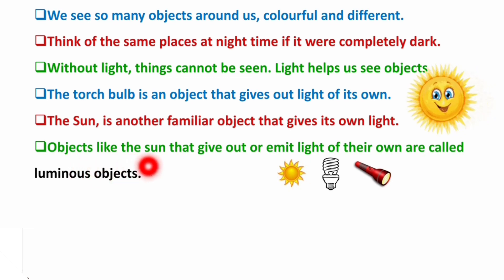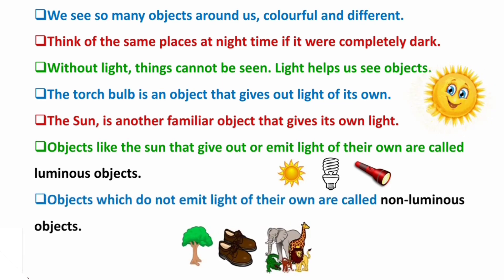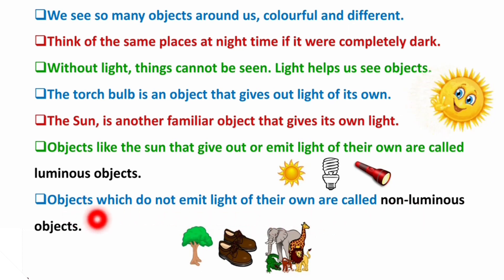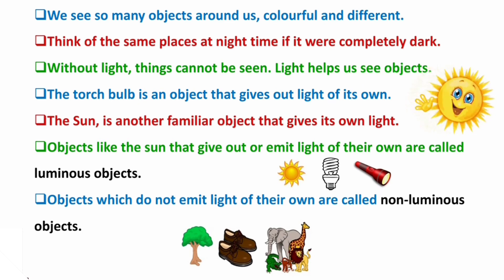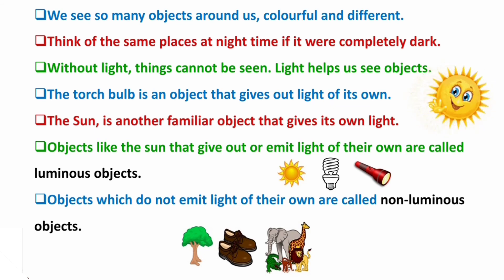Objects like the sun that give out or emit light of their own are called luminous objects. Objects which do not emit light of their own are called non-luminous objects. To see non-luminous objects, we need a source of light. This was also discussed in the previous chapter when we classified luminous and non-luminous substances.